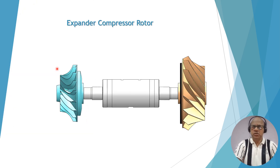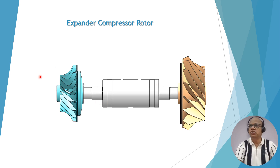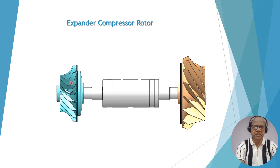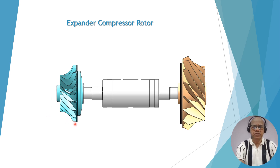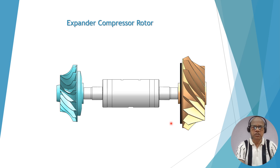In an expander-compressor rotor, it looks similar to a compressor rotor having two impellers — one impeller on each side. One wheel is called the expander wheel and on the other end it is called the compressor wheel or compressor impeller. Both are attached on a common shaft.